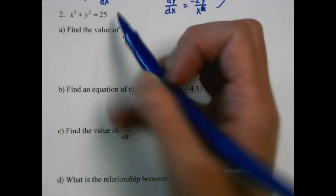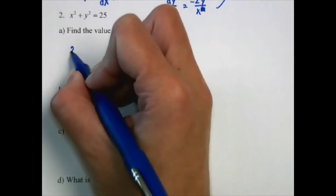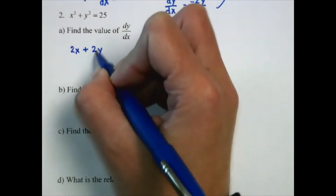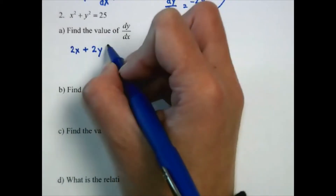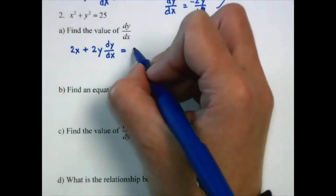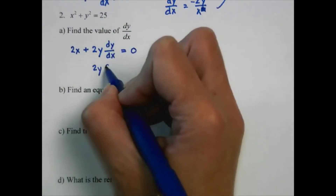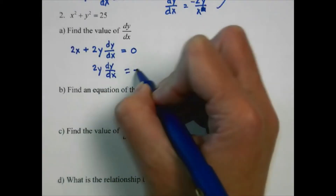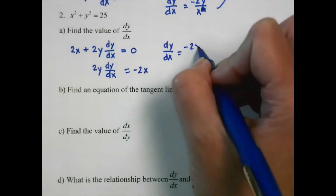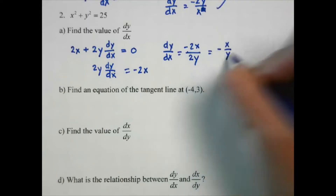Here's our next example. We've got x squared plus y squared equals 25. We're going to take the derivative: the derivative of x squared is 2x. The derivative of y squared is going to be 2y, and then we're going to have to apply the chain rule. So the derivative of y is dy/dx, and the derivative of 25 is 0. Now we solve: 2y dy/dx equals negative 2x, so dy/dx equals negative x over y.